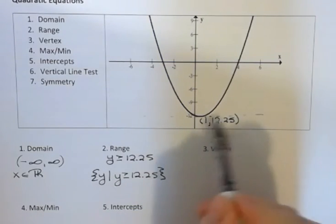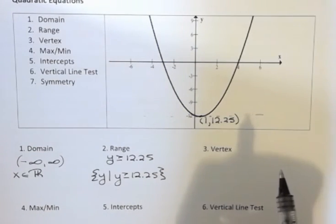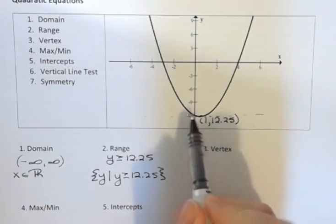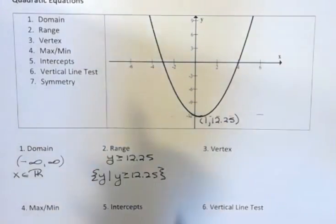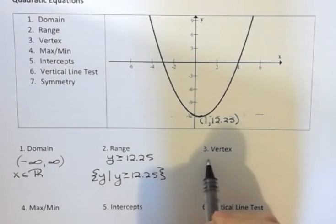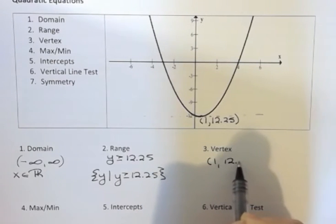What's the vertex? This is the vertex. The vertex is that point where it starts to change. It's going down and it starts to go up. That point is the vertex. That's given in the picture (1, 12.25).